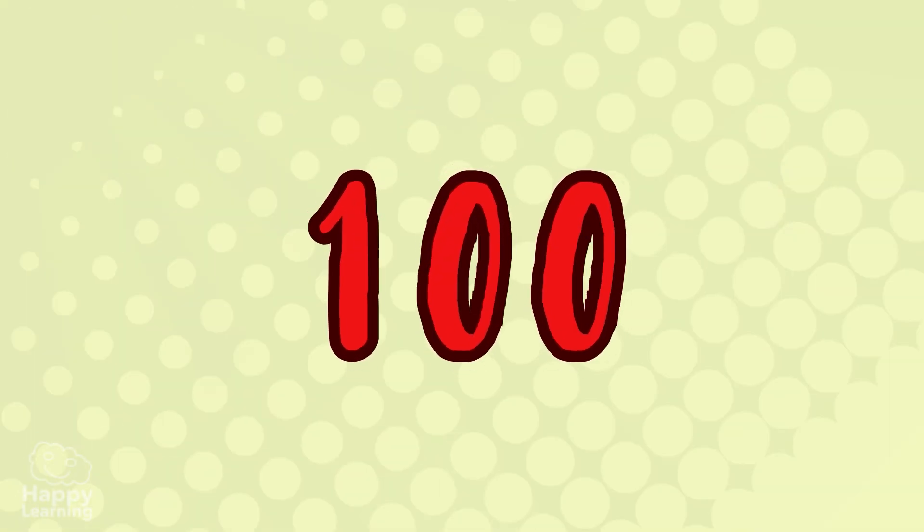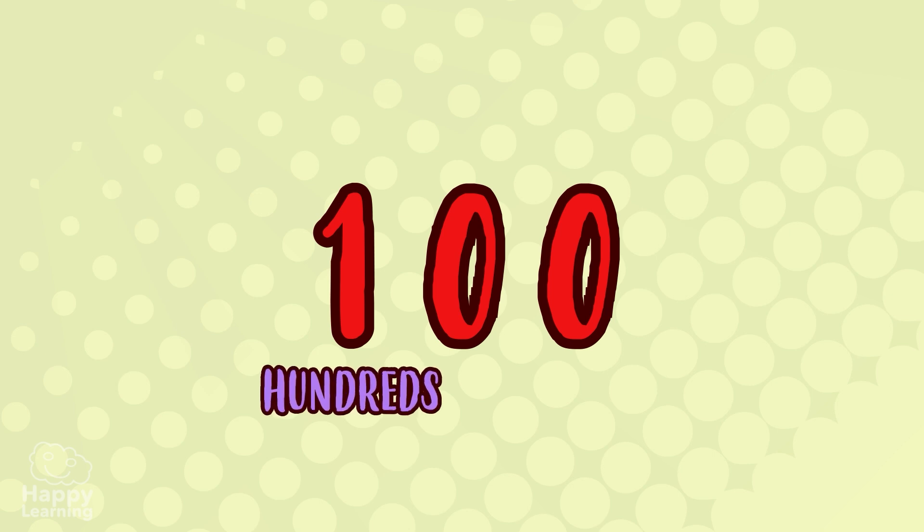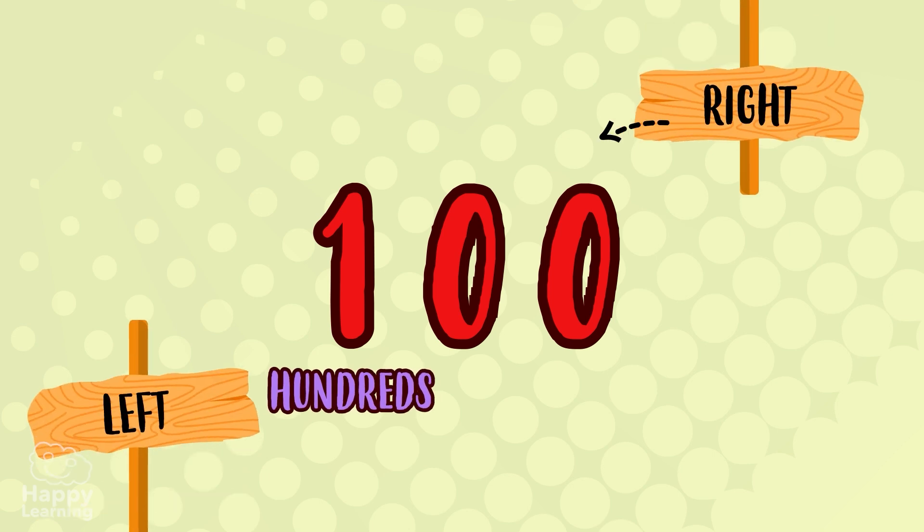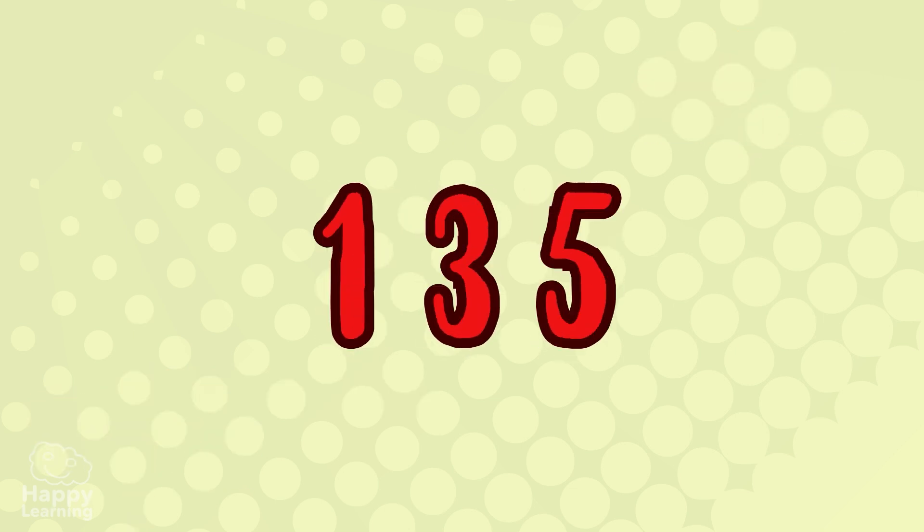The number a hundred has three digits. The hundreds are written in the third position, starting from the right. For example, let's write the number a hundred and thirty-five, which is equivalent to five units, three tens, and a one hundred.